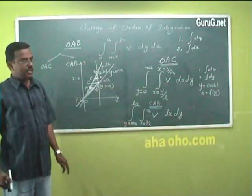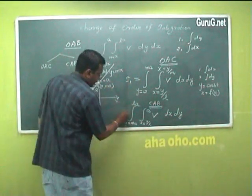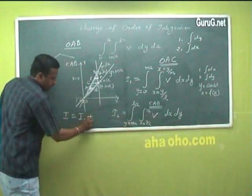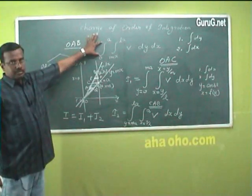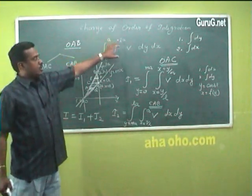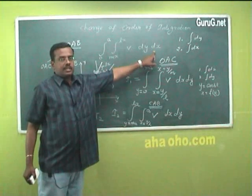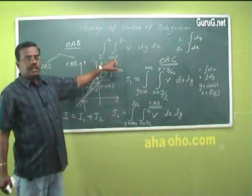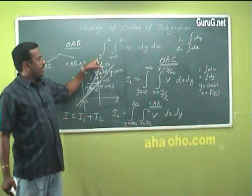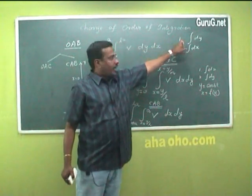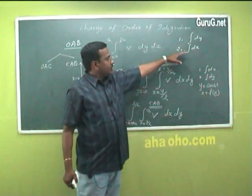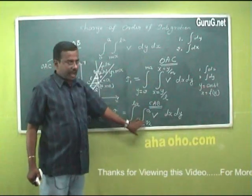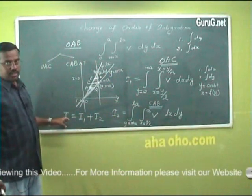We have changed the order of integration in both regions. Calling them I₁ and I₂, the complete solution is I = I₁ + I₂. The given order of integration was first with respect to y then x, since y limits are in terms of x and x limits are constants. After changing the order, we obtained two regions OAC and CAB, changed the order in each, and added the two integrals. That is the required solution.